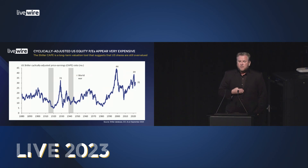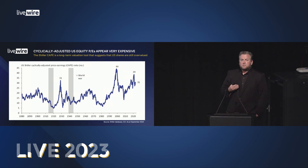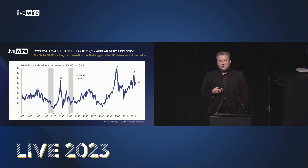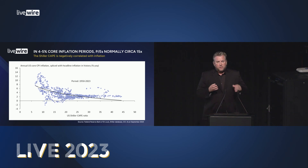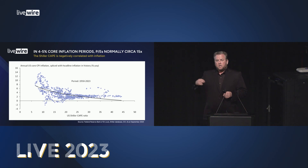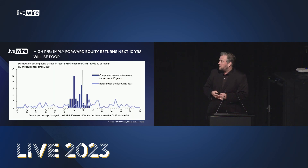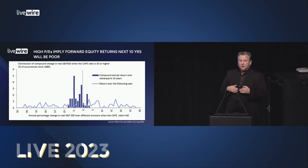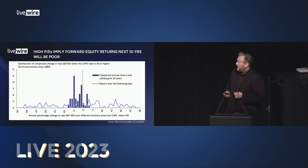These high interest rates — so-called high discount rates — are used to value all asset classes: equities, property, venture capital and private equity. When we look at cyclically adjusted price-earnings multiples for the S&P 500 over the last 140 years, we're currently sitting at 31 times. The 140-year average is 17 times, the median is 15 times. At a 4-5% core inflation rate, the S&P 500 CAPE should be around 15 times — it's obviously north of 30 times. Forward returns from S&P 500 exposures once the PE multiple pierces 30 times are demonstrably negative in every period, particularly when you adjust for inflation.